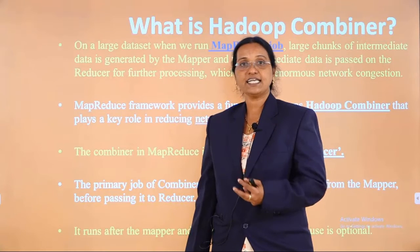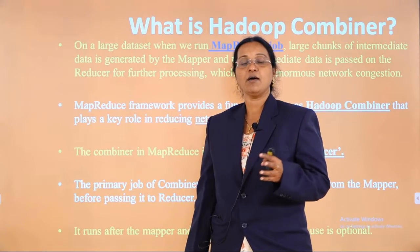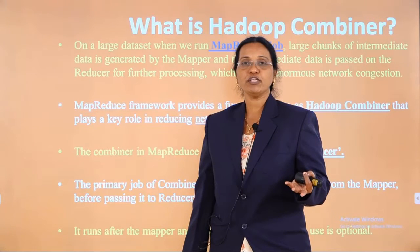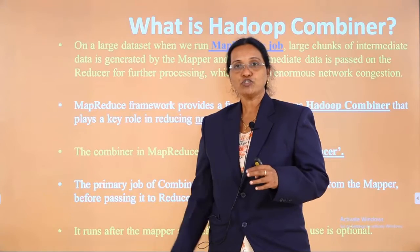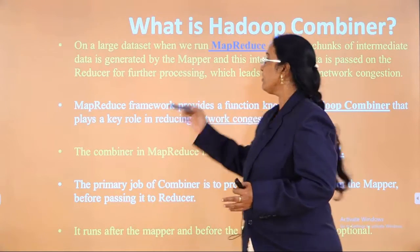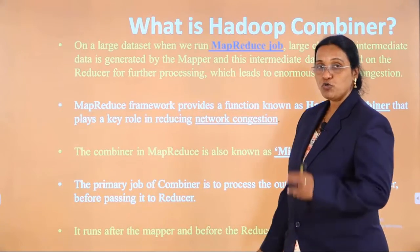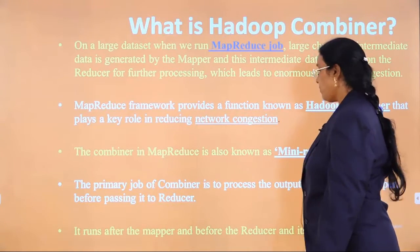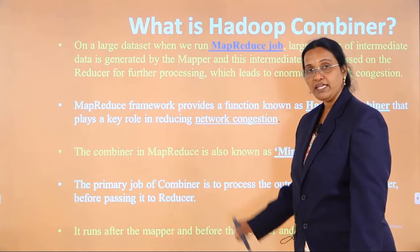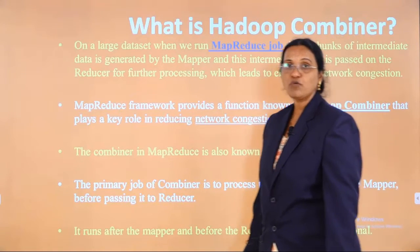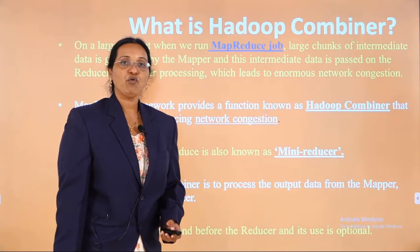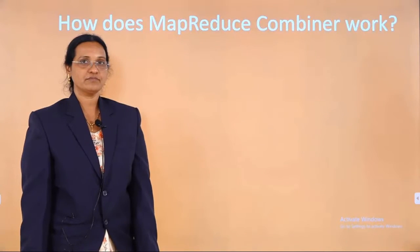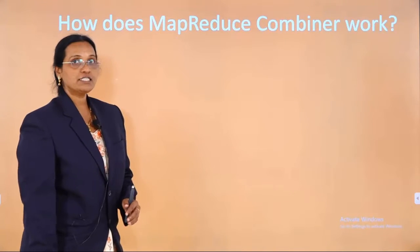The reducer takes large datasets, converts them into key-value pairs, and those pairs are transferred to the reducer — creating network congestion. The combiner does the job of the reducer before the reducer runs, which is why it is called a mini reducer. Usage is purely optional, but it is always advisable to use combiners if you want to improve performance and reduce network congestion.